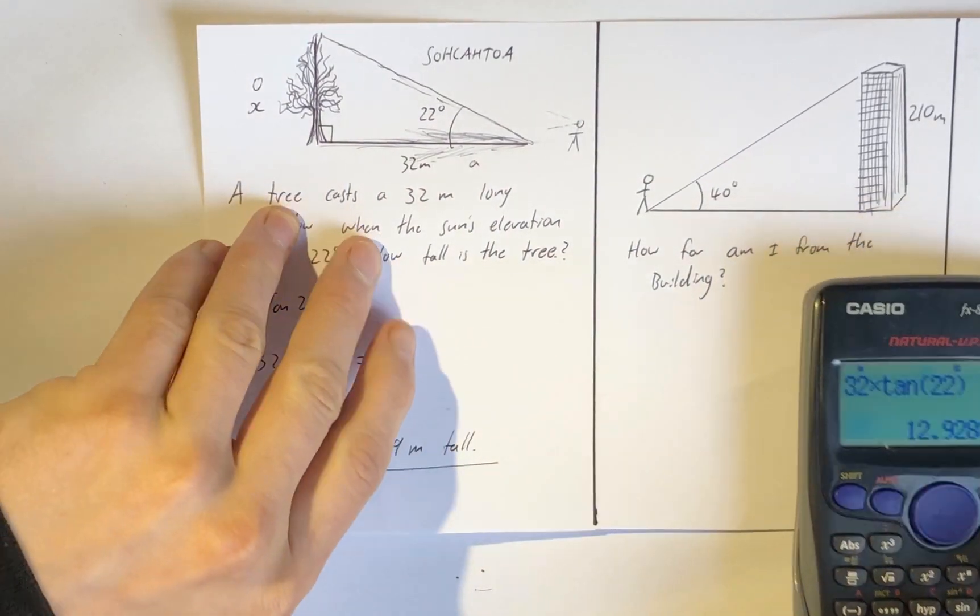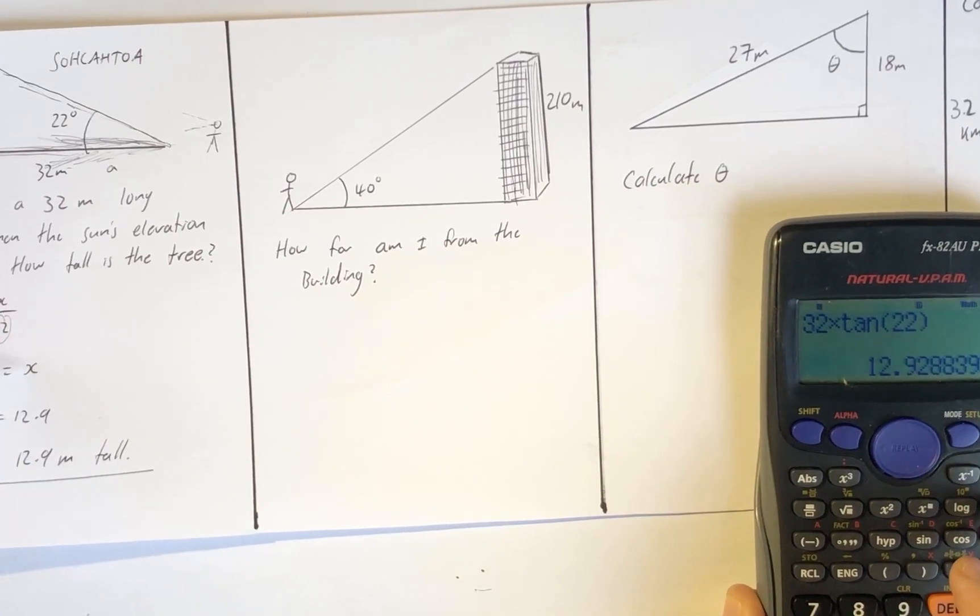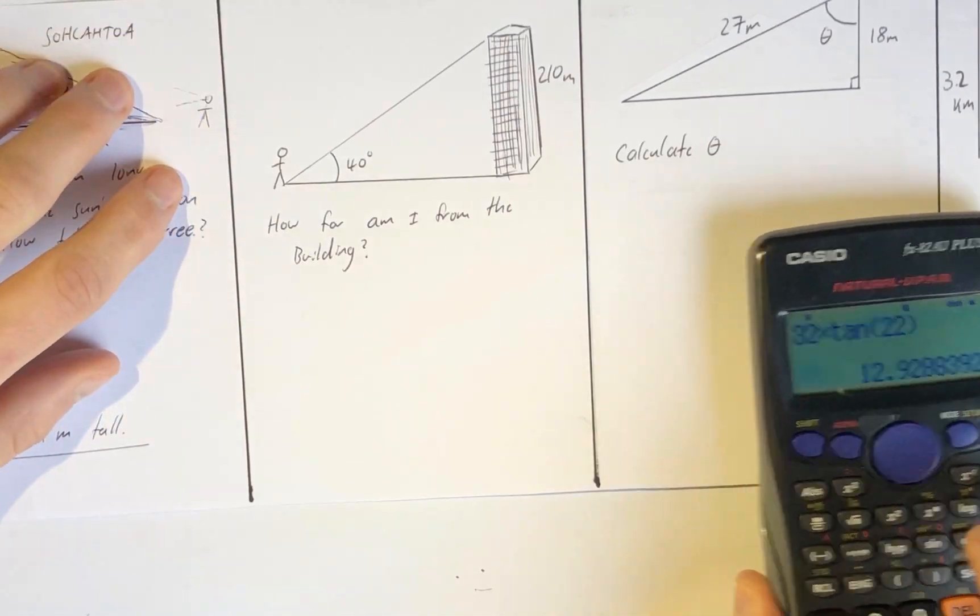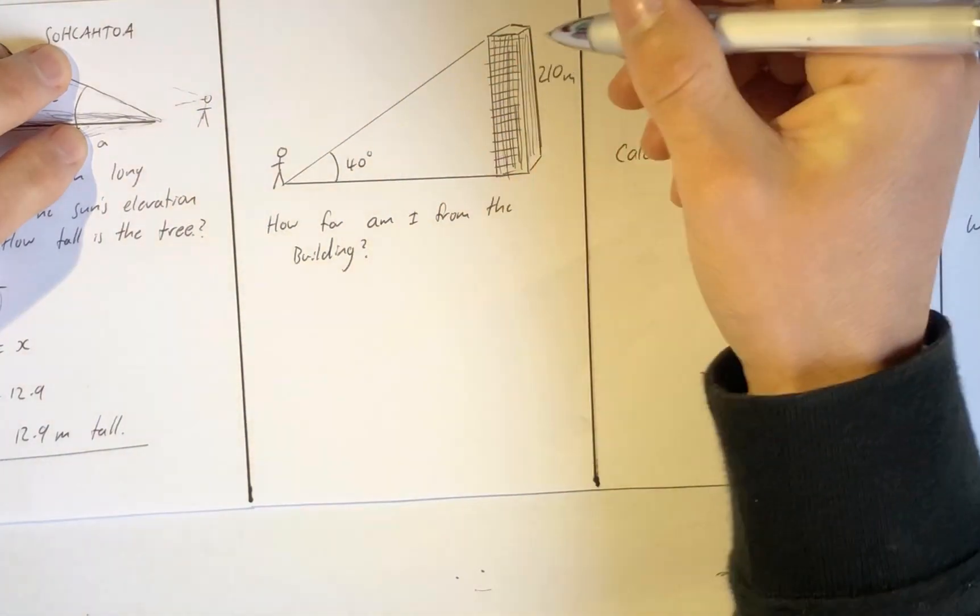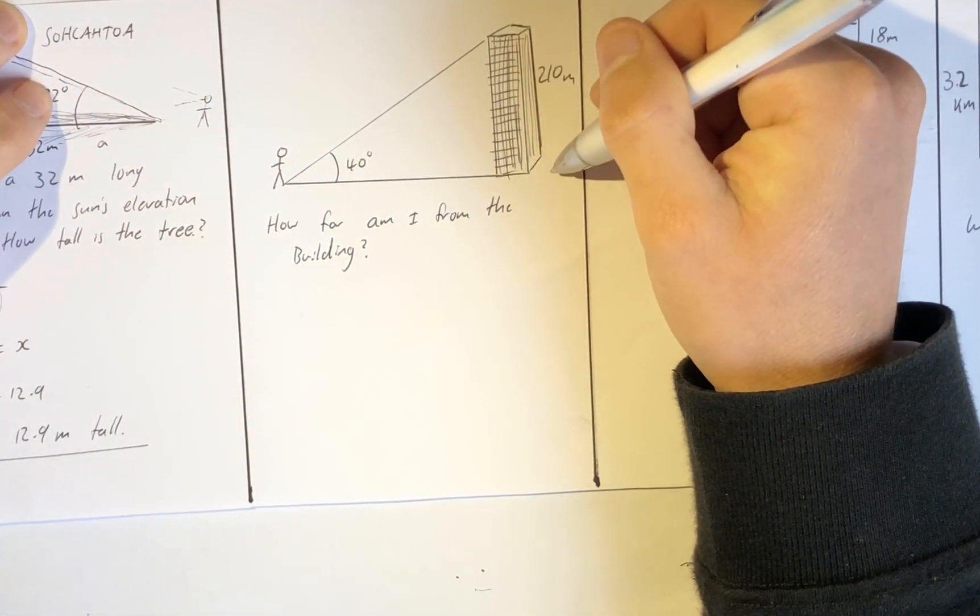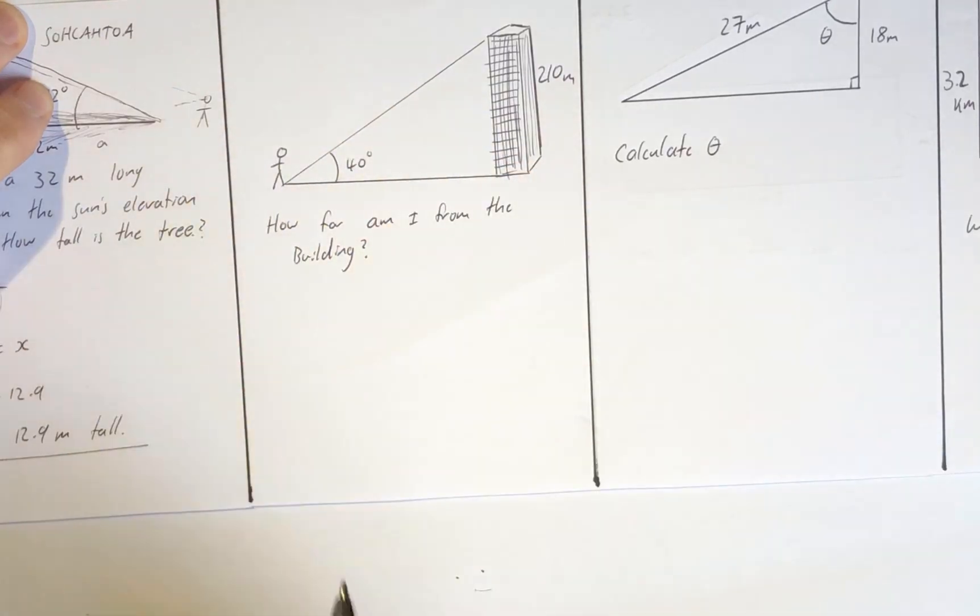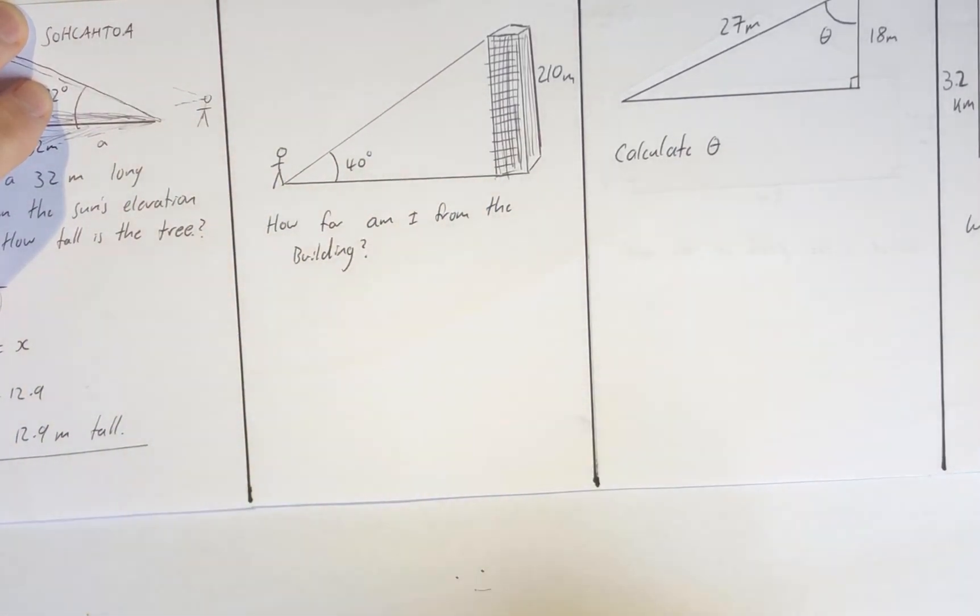A pretty similar problem. I can immediately tell you that this will probably be tan. So how far am I from the building? The building is 210 high and I'm looking up at the top of the building at 40 degrees. You need to figure out the total distance from the building.